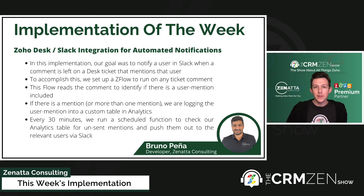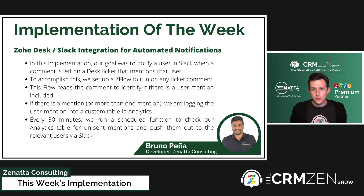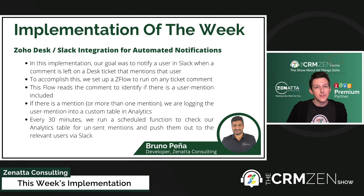If there is a mention in that ticket, or maybe more than one mention, we actually log it into a custom table inside of Zoho Analytics. That step is basically the one that allows us to parse out the multiple mentions so that more than one person gets a notification per that individual comment. Then every 30 minutes we run a scheduled function that checks against the analytics table — it looks at any user mentions that have not yet been sent through Slack.